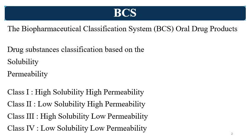If solubility is high and permeability is also high, the drug falls into BCS Class 1. BCS Class 1 drugs are highly soluble and highly permeable. BCS Class 2 drugs are low soluble but highly permeable. BCS Class 3 drugs are highly soluble but low permeable. BCS Class 4 drugs are low soluble and low permeable.